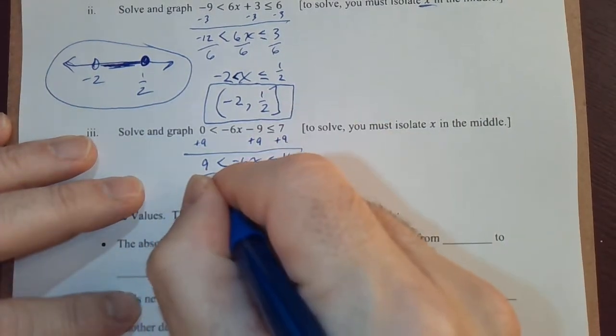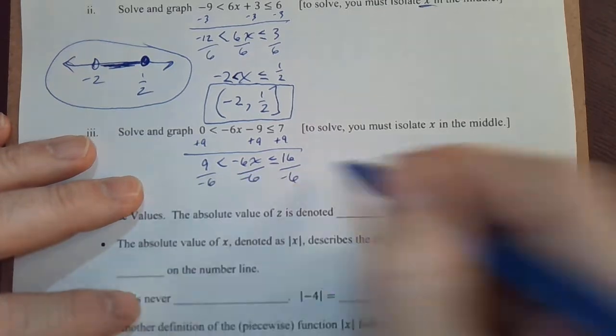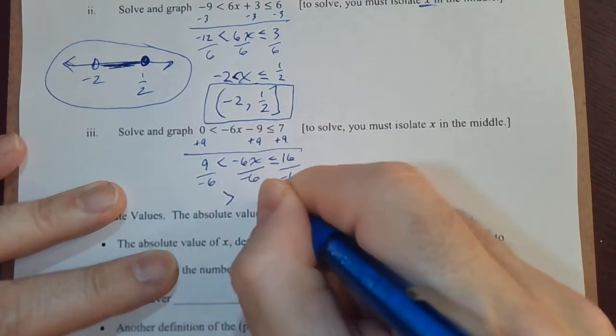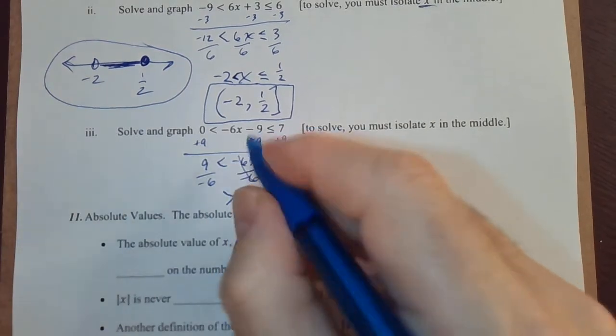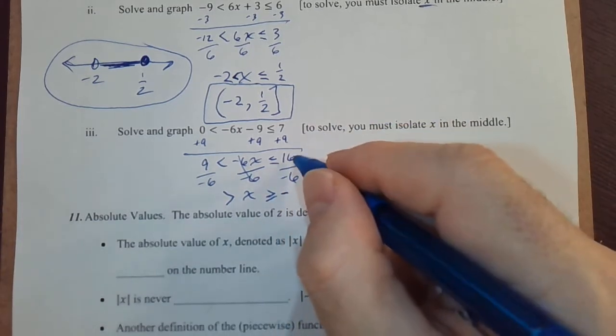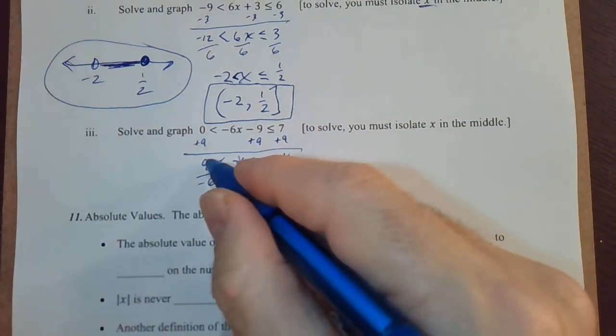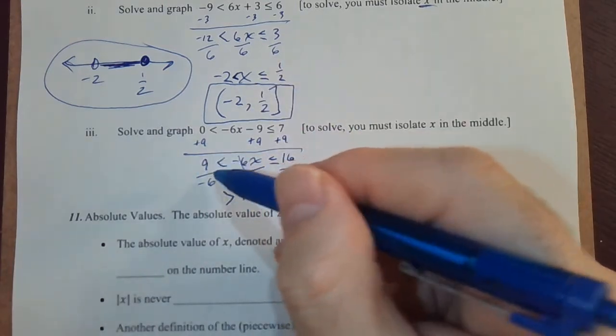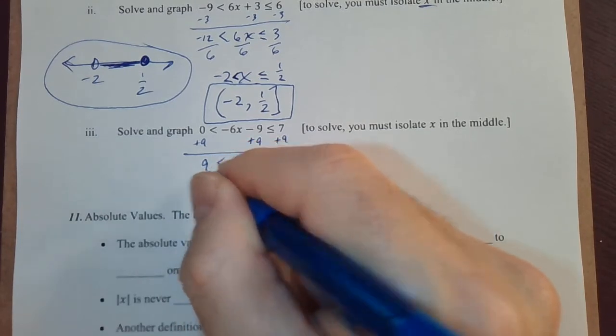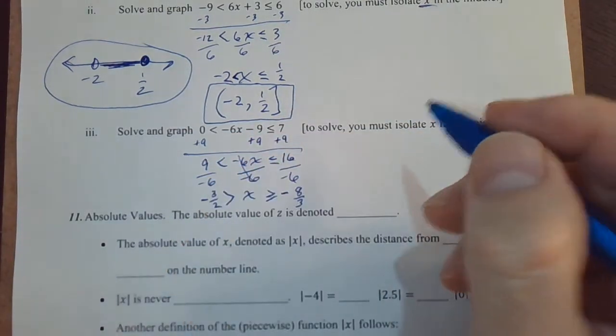Then we divide by negative 6 to get x by itself in the middle. And note what happens, we're dividing everything by negative, we have to reverse all those inequalities. So that's now greater, this is greater equal. And that cancels to give me x in the middle, 6 over 6. 16 over 6 is negative, reducing gives me 8 over 3. And on this side, we get 9 minus 6, which is negative 9 over 6, so that would be reduced to 3 over 2, negative 3 over 2.